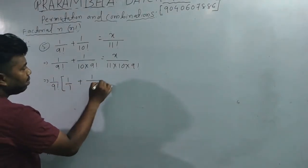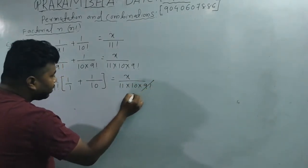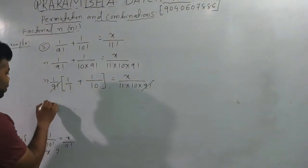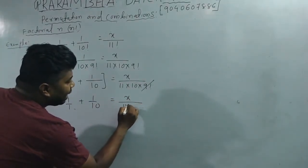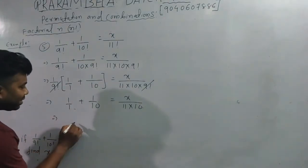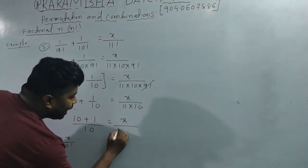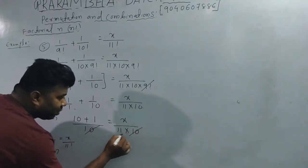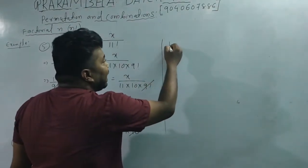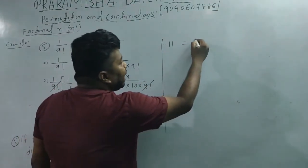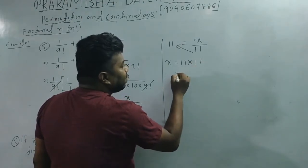After cancelling 9 factorial from both sides, we get 1 plus 1/10 = x divided by (11 × 10). Taking LCM on the left: (10 + 1)/10 = x/(11 × 10). So 11/10 = x/110. Cross multiplying: x = 11 × 11 = 121.